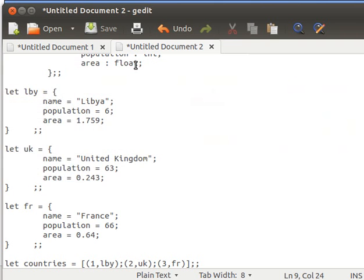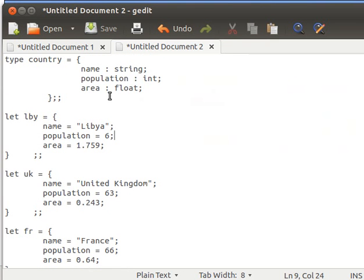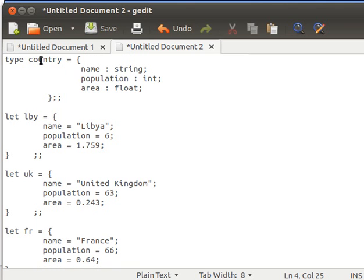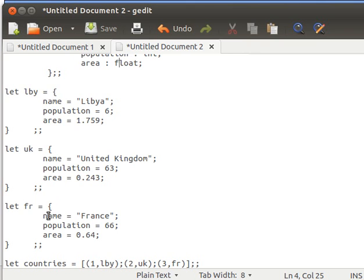In the OCaml tutorial we learned about records. What I've done here is I've created a small record for country, and the element fields are name of type string, population of type integer, and area of type float. Then I've made three variables of this type: LBY for Libya, UK for United Kingdom, and FR for France. Libya, the name will be Libya, population is about 6 million, area is 1.759 million square kilometers.